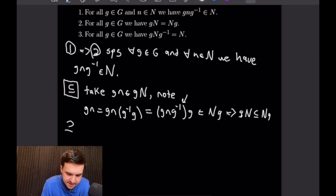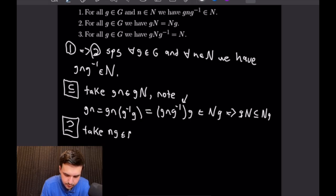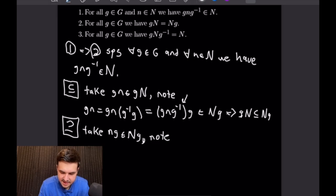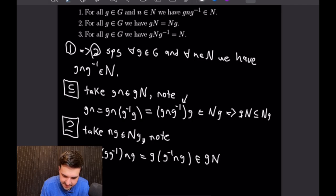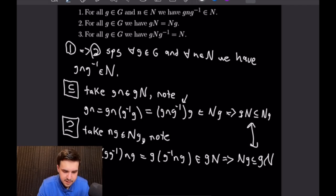Now for the reverse inclusion, we take an element ng from the right coset Ng and use a creative use of the identity to show it is in the left coset gN. We left-multiply by gg⁻¹, giving g times (g⁻¹ng) times g, and what we have in parentheses is an element of N, so this is in gN. That proves Ng is a subset of gN, and together we have shown the two sets are equal.